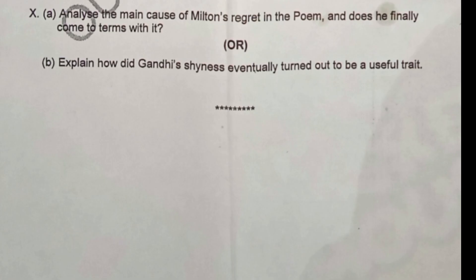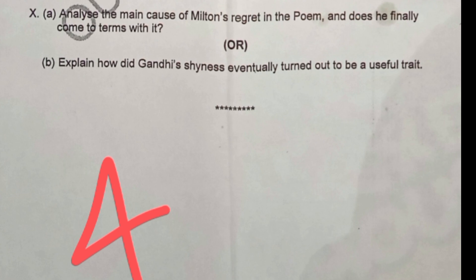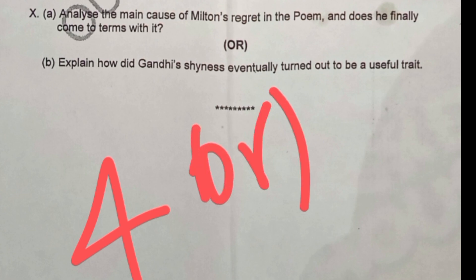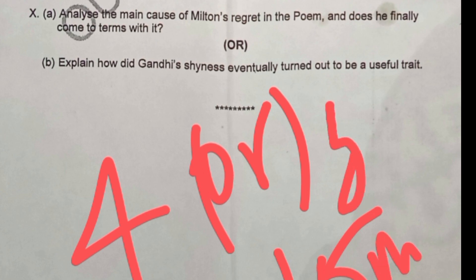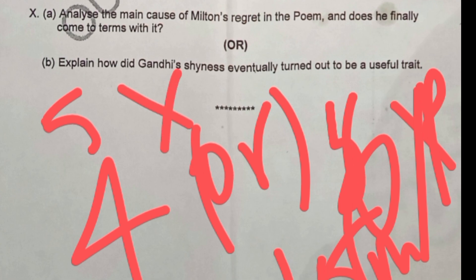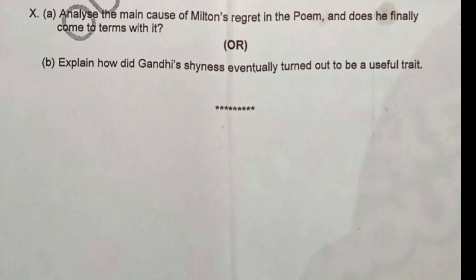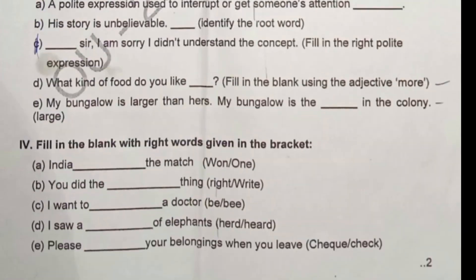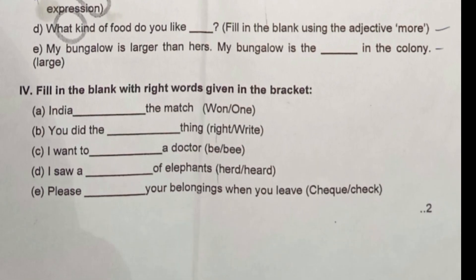This is the Part B pattern — four questions with internal choice in each. Each question consists of 15 marks. Part A consists of six bits, each carrying four marks, and you need to attempt any five bits — five into four equals 20 marks. This is the question paper pattern for the previous year General English paper.